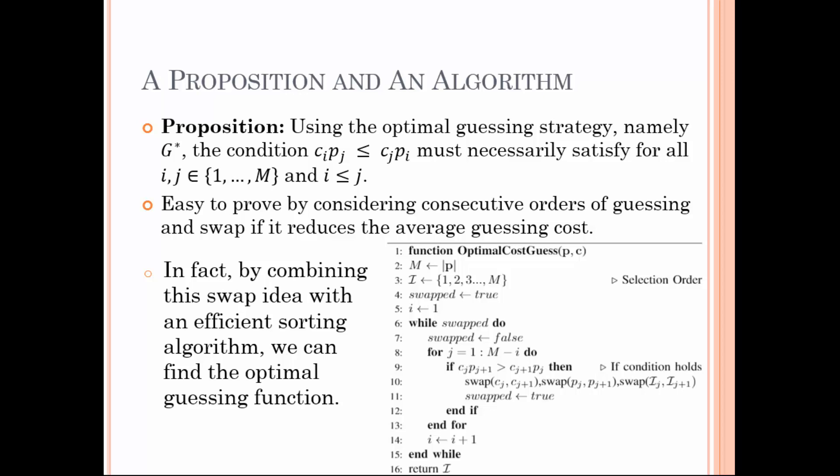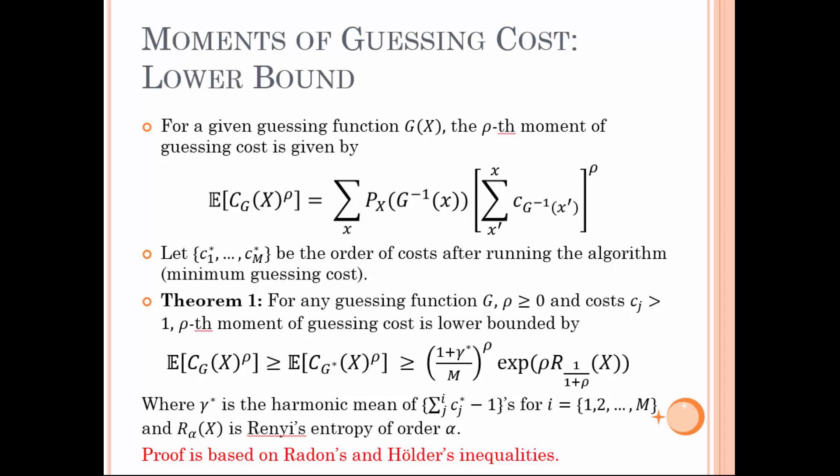To generalize, we consider the moments of guessing cost instead, as done by other past studies. For large M, the calculation of moments of guessing is quite prohibitive. Therefore, deriving upper and lower bounds on the moments of guessing cost is desired. One of the contributions of our paper is to derive asymptotically tight upper and lower bounds on the moments of guessing cost.